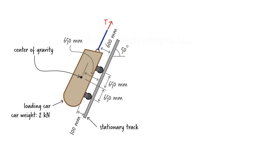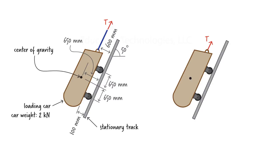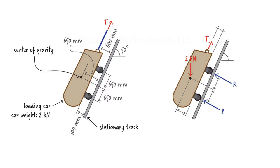We start by placing the weight of the car at its center of gravity. This is going to be a downward force of 2 kilonewtons. The car rests on the track at two points where the wheels are in contact with the surface of the track. The wheels we treat as rollers; therefore, there is going to be a perpendicular reaction force at each roller support. We label these forces as P and R. Since we are considering the system as a whole, no other force appears in our free body diagram.